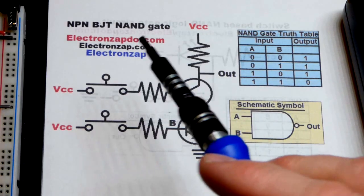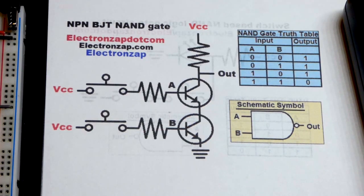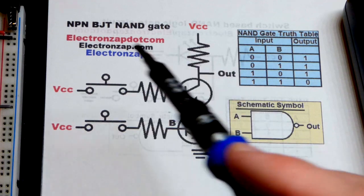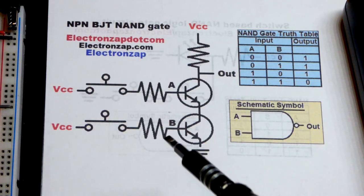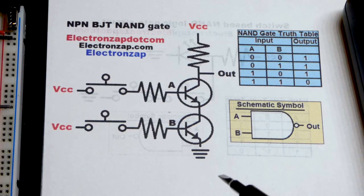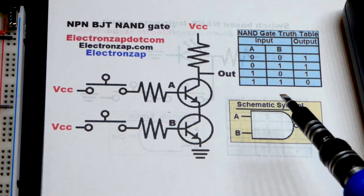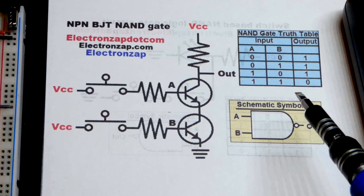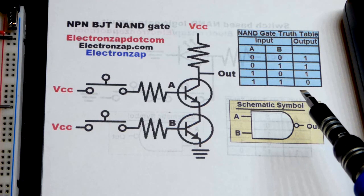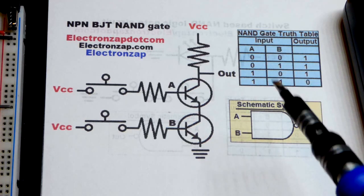In this video, we're going to make another NAND gate, and this NAND gate is going to be made with NPN bipolar junction transistors. So the NAND gate is like the AND gate in a way, but the opposite. The output is inverted from what it would be from the AND gate.